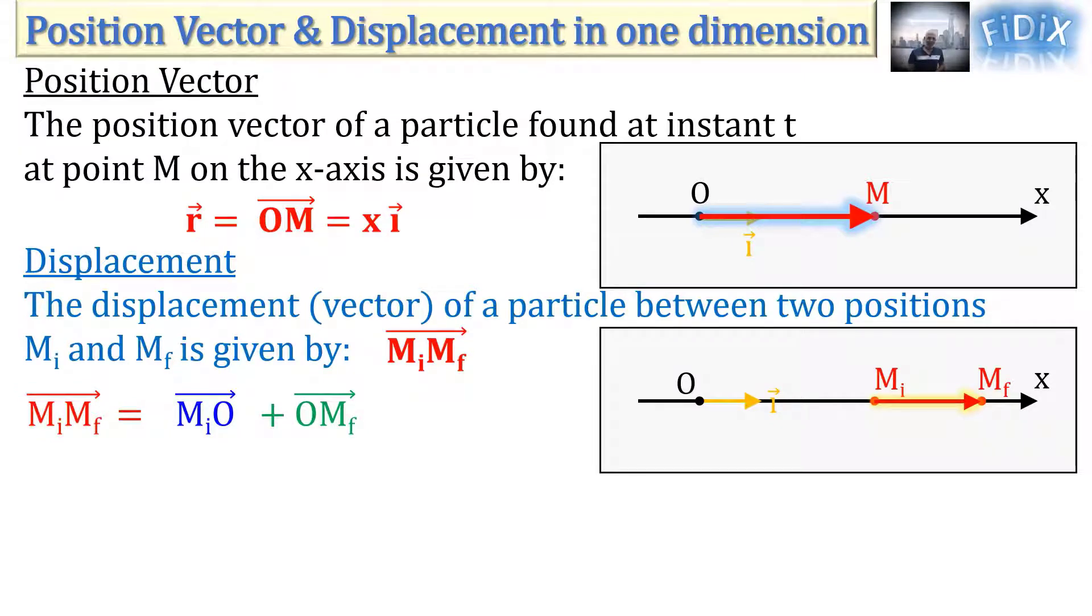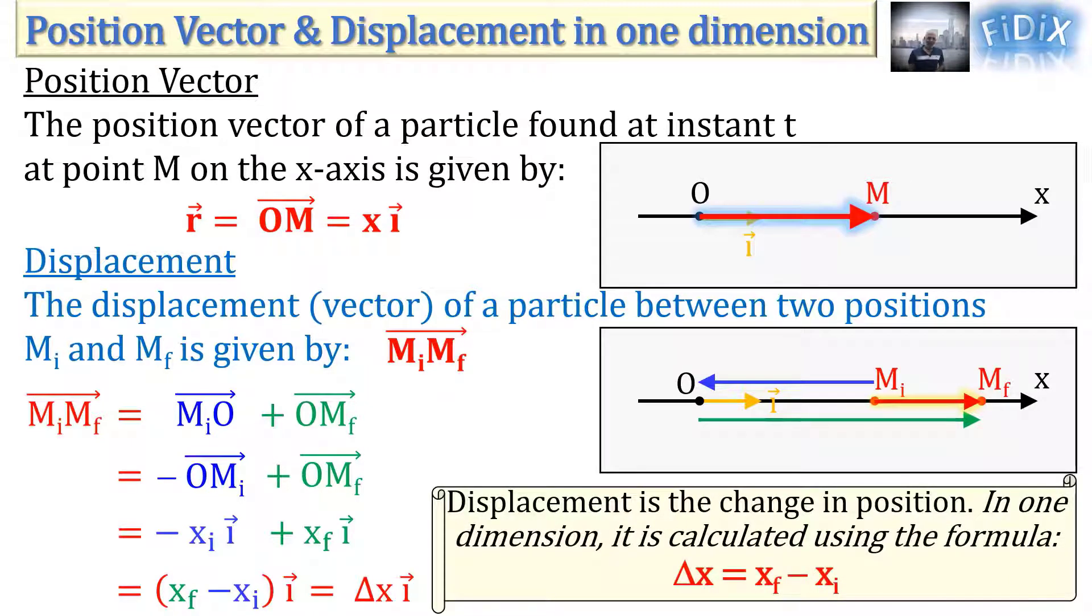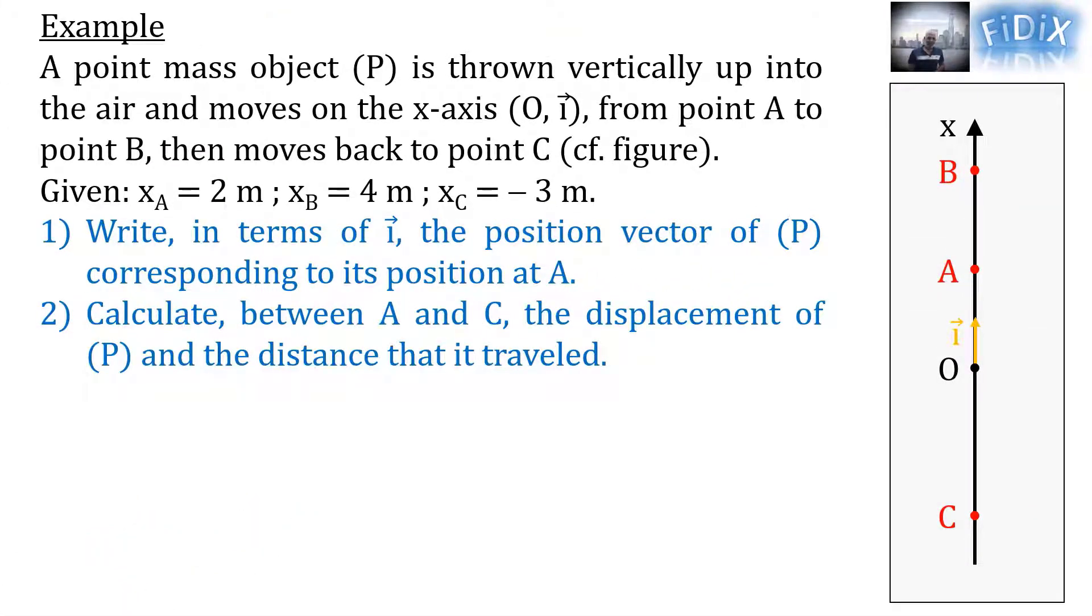Mathematically we can write MIMF equals MIO plus OMF. MIO can be replaced by minus OMI while OMF stays the same. By writing vectors OMI and OMF in terms of the corresponding abscissas and the unit vector I, we get XF minus XI into I, which is equal to delta XI, where delta X equals the final abscissa minus the initial abscissa and means the change in abscissa, which corresponds to the change in position of the particle. Therefore, the displacement is defined to be the change in position and can also be written in one dimension as delta X.